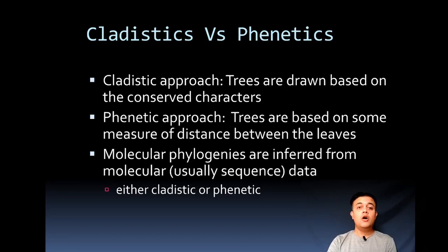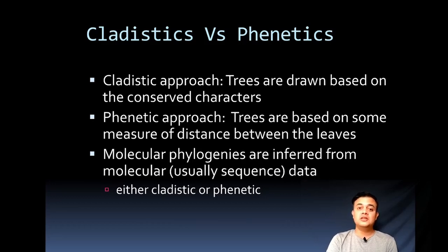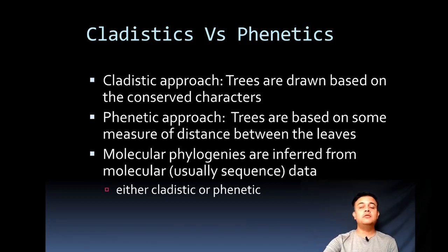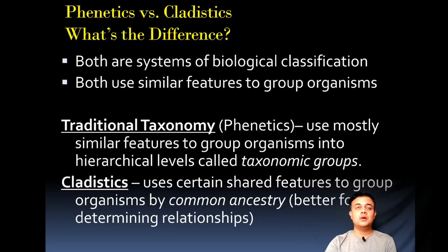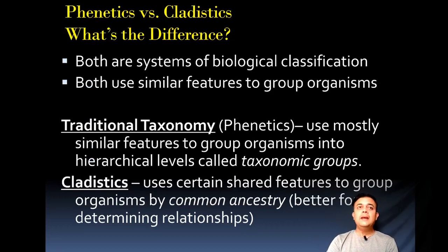Molecular phylogeny doesn't mean it's always cladistic or phenetic — it could be a mixed approach. The inferred data is molecular, usually DNA sequence data, though it can also be protein or amino acid sequence data. It could be cladistics or phenetics. Phylogenetic systematics doesn't mean it's always phenetics — mostly it is cladistic rather than phenetic.